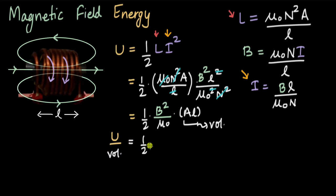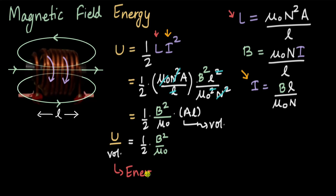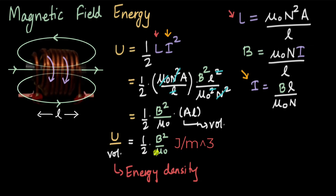Taking the volume factor to the left-hand side, we get U divided by volume equals half times B squared divided by μ₀. Energy divided by volume is energy density — specifically magnetic field energy density — given by B²/(2μ₀). The units of this are joules per meter cubed.